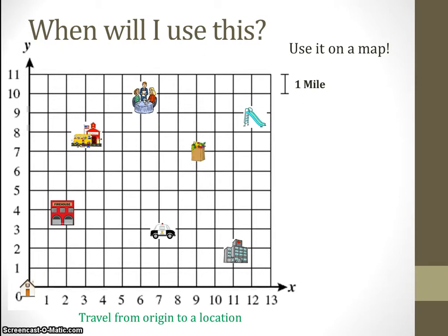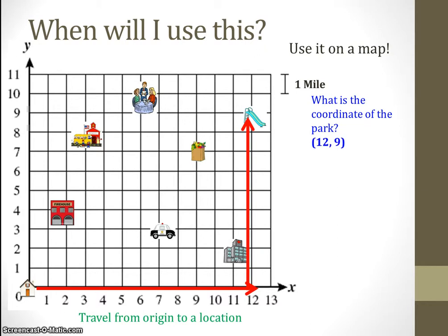First, we're going to look to see how far we have to go to the park. What is the coordinate for the park? We see that we have to travel 12 spaces on the x-axis and 9 spaces on the y-axis, which gives us a coordinate of 12, 9.